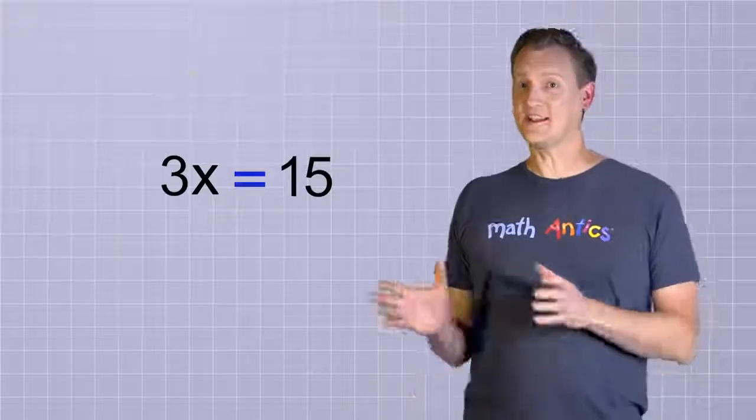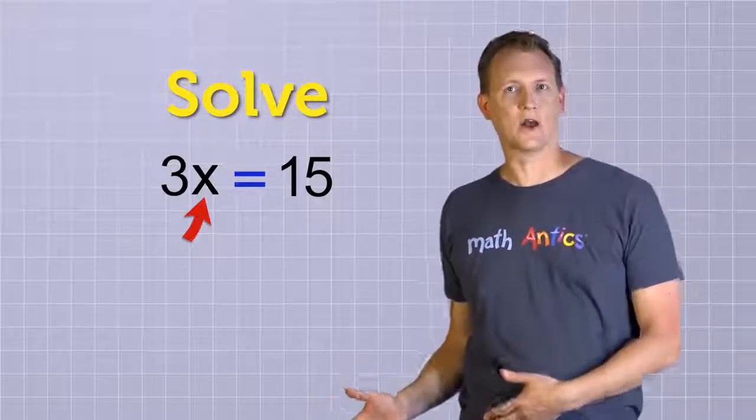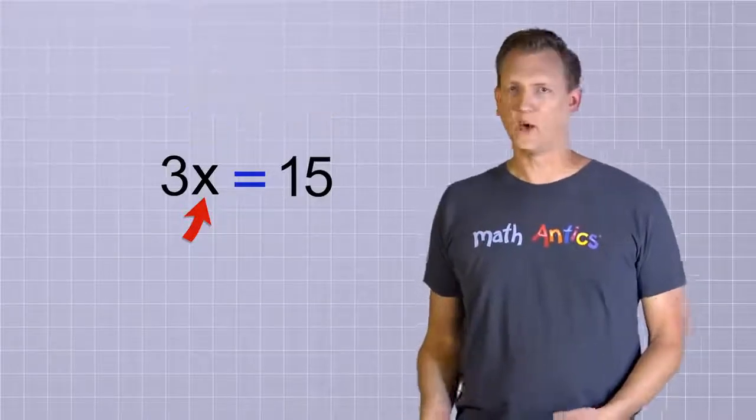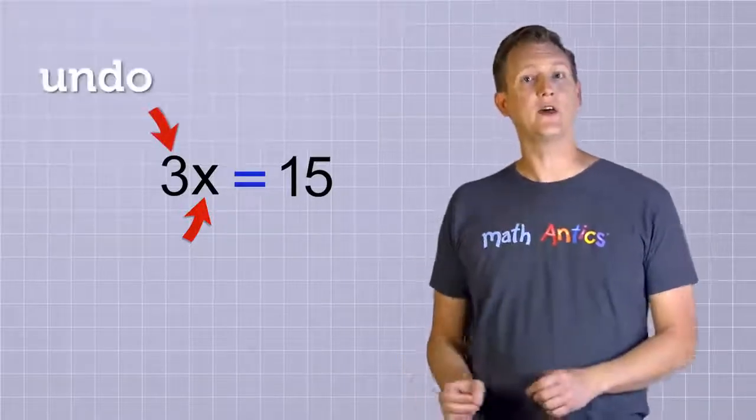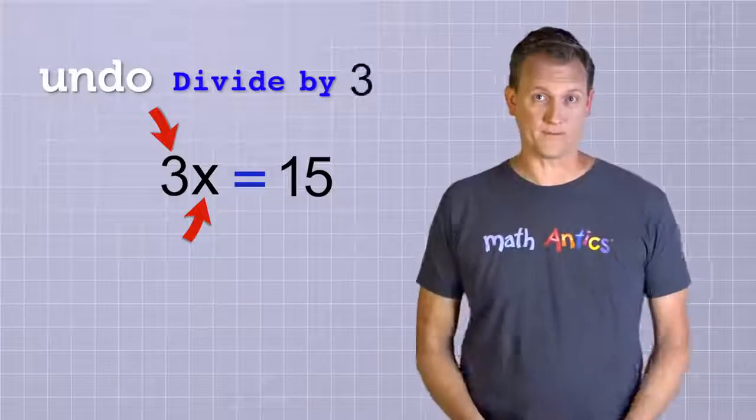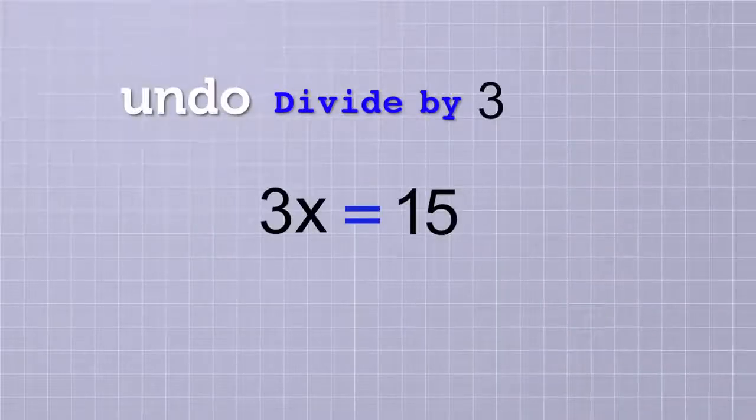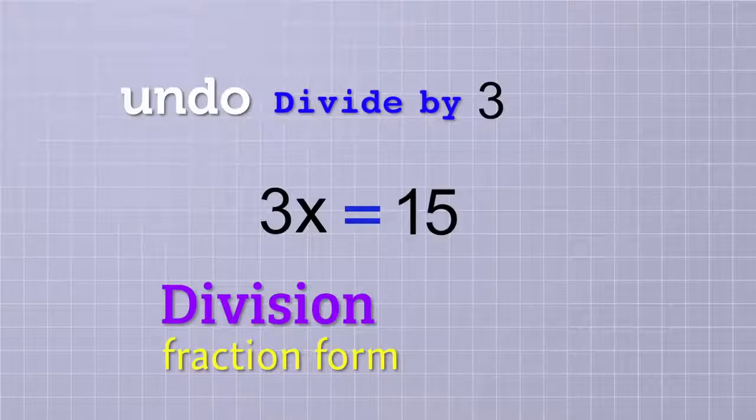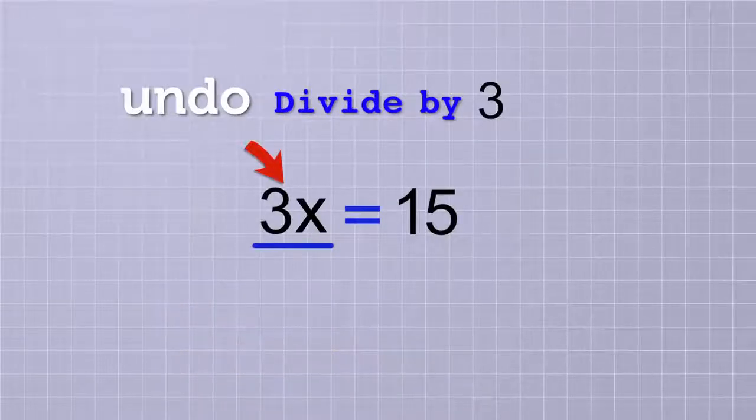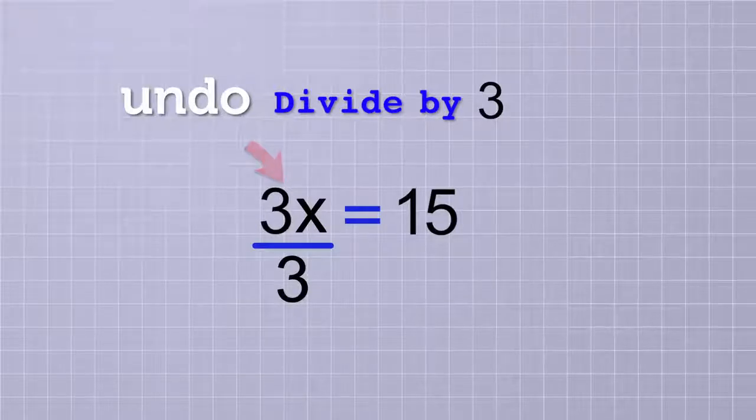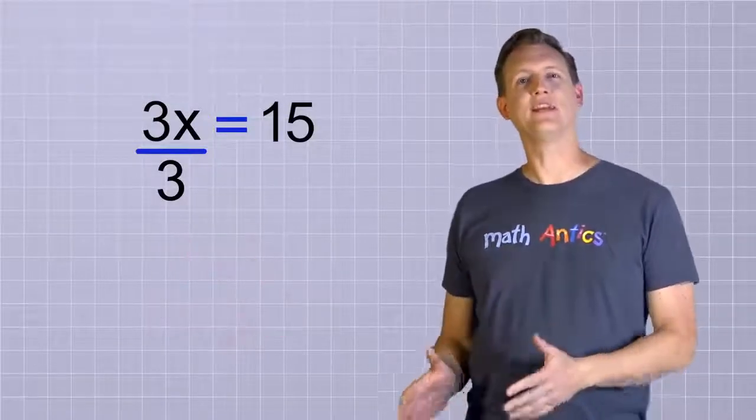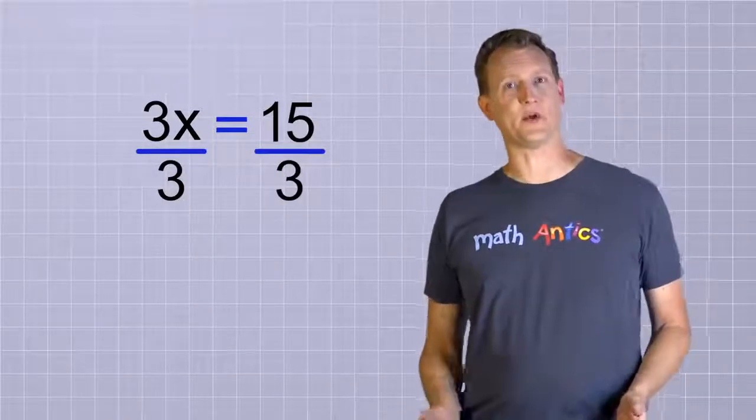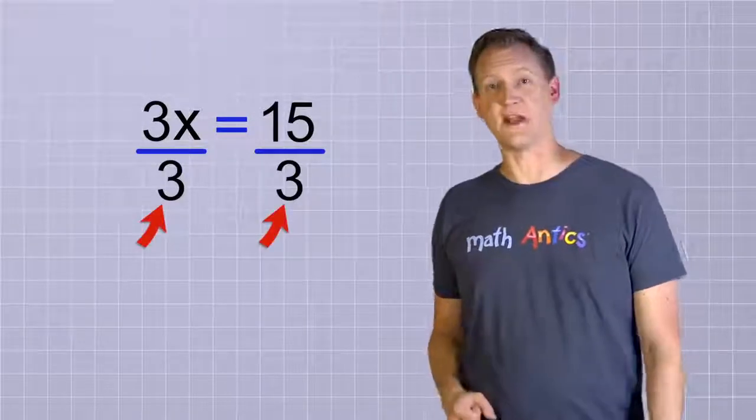We need to solve this equation. That means we need to get the unknown, x, all by itself on one side of the equal sign. Right now, the x is not by itself because it's being multiplied by 3. So to undo that operation, we need to divide that side by 3. In algebra, we almost always write division in fraction form. So to divide this side by 3, we just write a fraction line under it and we put a 3 below the line. This means 3 times x divided by 3. But don't forget our rule for rearranging equations. We have to do the exact same thing to the other side to keep the equation balanced. Now both sides are being divided by 3.